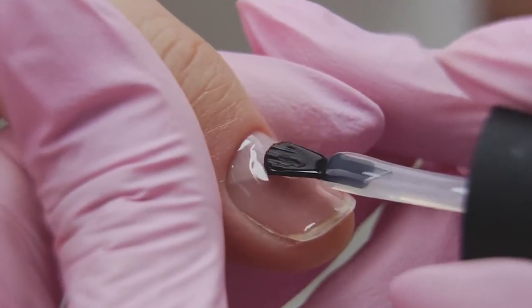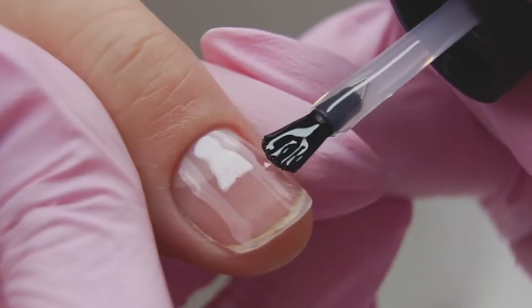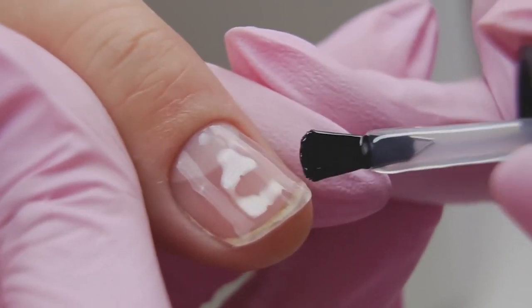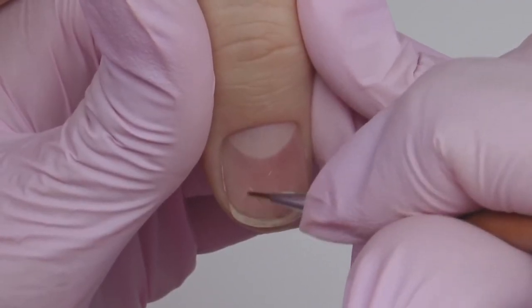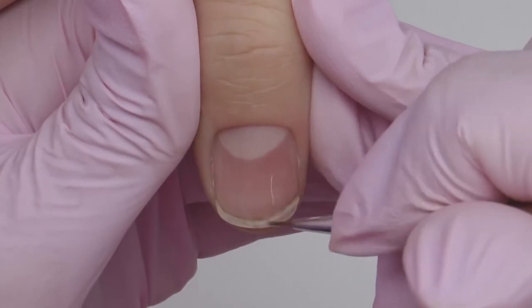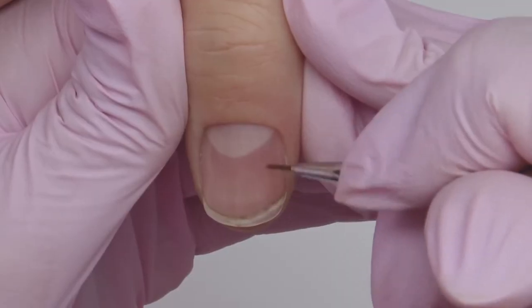I apply more base coat on the thumb. If you can't work quickly with this consistency, you can divide this process into two steps. Apply the first thin layer and fill in all the flaws. They are mostly on the thumb. Then cure.